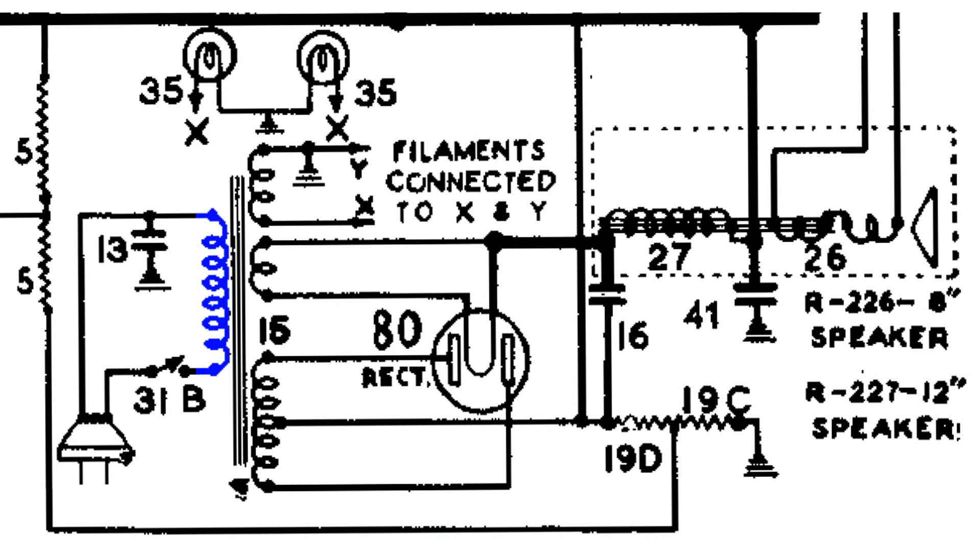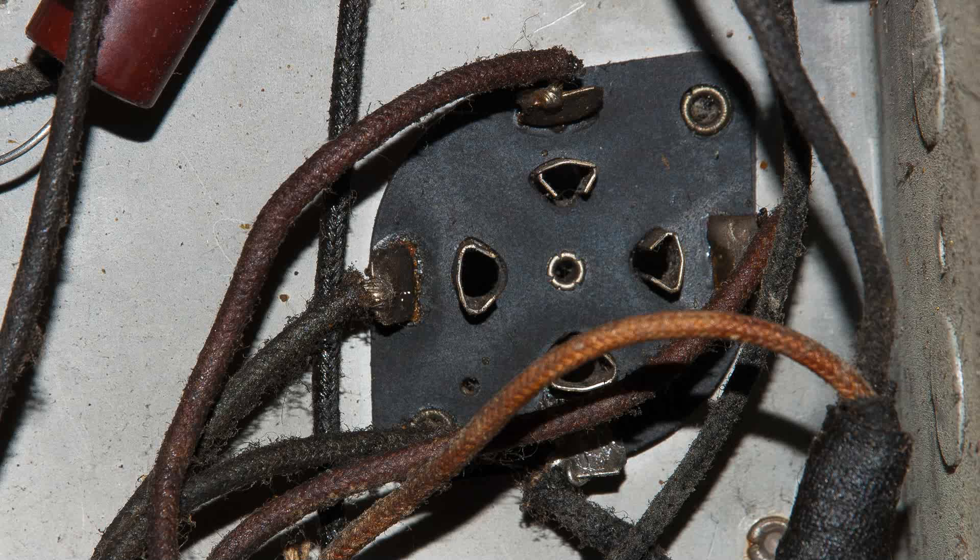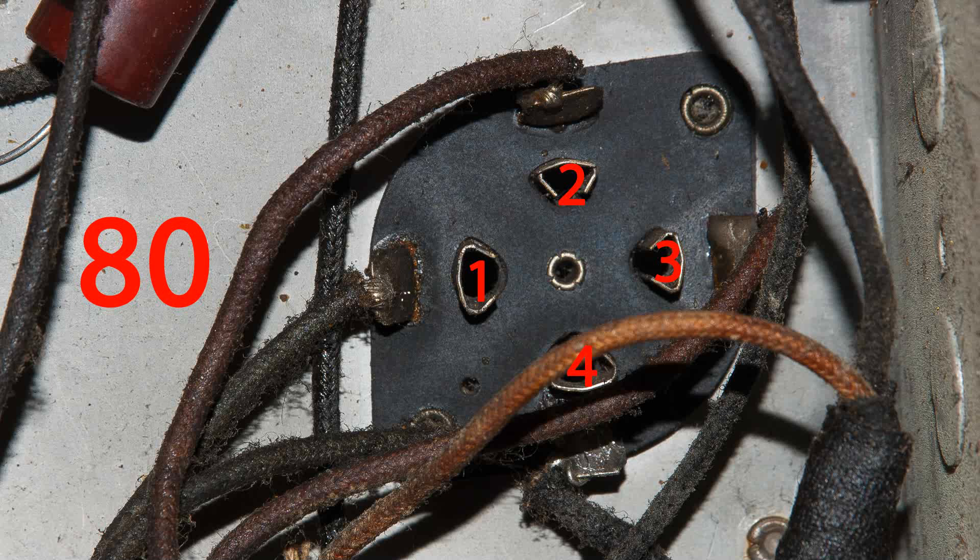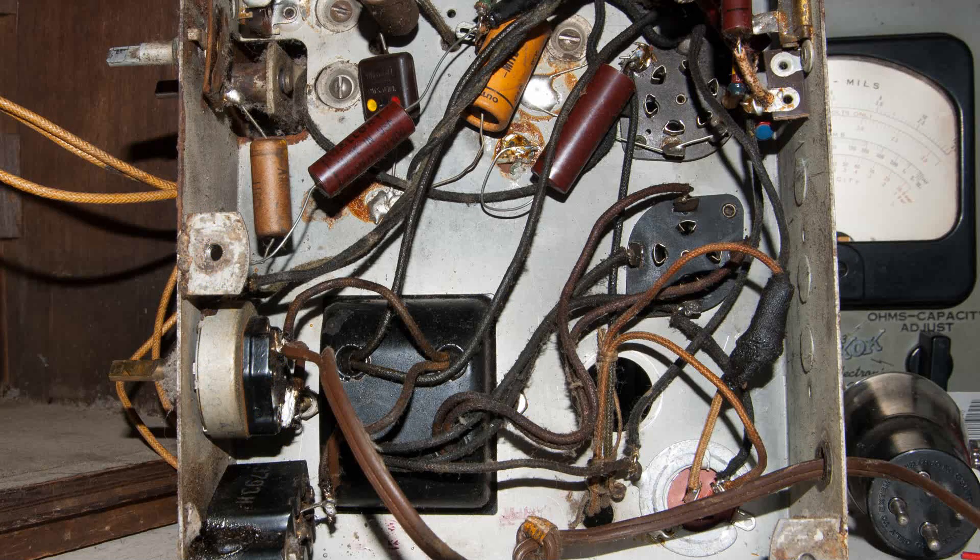Now I'm going to move to the secondary that goes to the 80 rectifier. Here is the socket, and we're going to find a small discrepancy between the way it's wired and the drawing. It doesn't matter in this case, but you run into that quite often and you have to determine if it's a problem or not. Here is how the tube counts. Here is where I'm going to be testing the secondary that goes to the 80 tube.